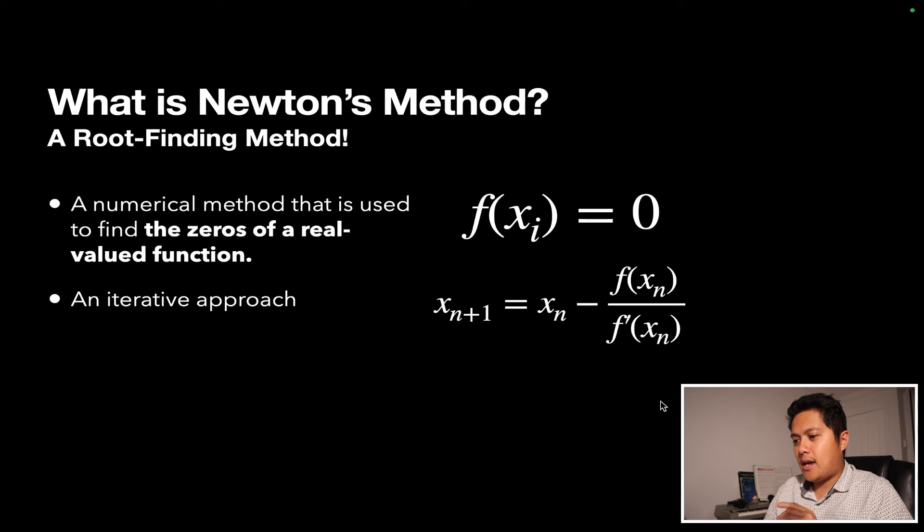So Newton's method is a root finding method. It's a numerical approach that is used to find the zeros of a real valued function. So when the function f is evaluated at x subscript i, there could be multiple roots. This function will be equal to zero. And not only that, it's an iterative approach, as in your guesses for what the roots are are going to depend on what your previous guesses are. So you start with some initial guess, your n equals one guess, and then your n equals two guess will be dependent on your n equals one guess, but also the function evaluated at x of one and the derivative at x of one. And that just keeps going and going and going.